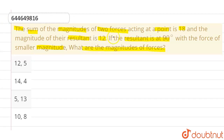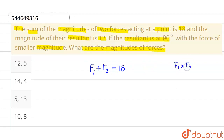We are told that the sum of magnitudes of two forces — let's say the first force has magnitude F1 and the second force is F2 — so F1 plus F2 equals 18. Let us say F1 is greater than F2. The magnitude of the resultant, which is the magnitude of F1 vector plus F2 vector, is 12 units.